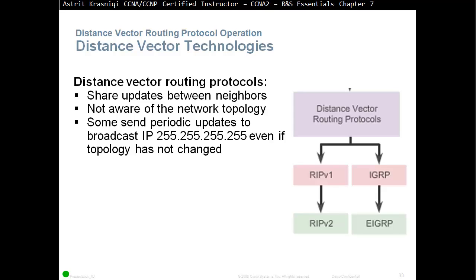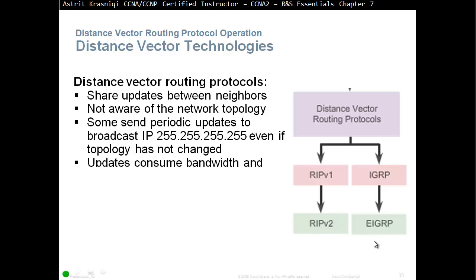RIPv1 sends an update every 30 seconds. RIPv2 does not send as a broadcast — at least version 2 improved that. RIPv1 and IGRP send updates as a broadcast, while RIPv2 and EIGRP send updates as a multicast.